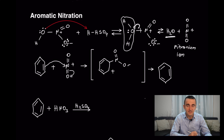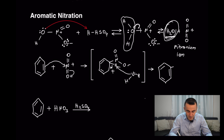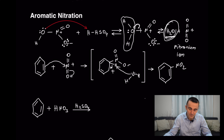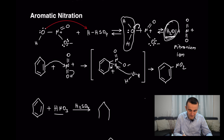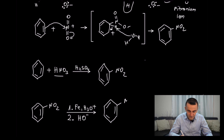The nitronium ion attacks: the double bond attacks the nitrogen, and the bond moves to the oxygen to respect the octet rule. The intermediate has a negative oxygen and a positive charge on the carbon next to the electrophile. Water then acts as a base to remove the hydrogen, the bonding pair moves to reform the double bond, and the final product is nitrobenzene. This can be written in a shorter way as just the nitration of benzene.